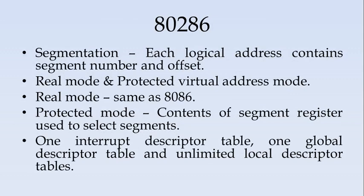In 8086, we have segmentation. Each logical address contains a segment and an offset. 8086 follows the same procedure in real mode. The other mode is called protected virtual address mode, which is available in 8086. In real mode, the same as 8086, when all the segments are used. In protected mode, the contents of the segment registers are used to reference segments of memory for virtual addressing.